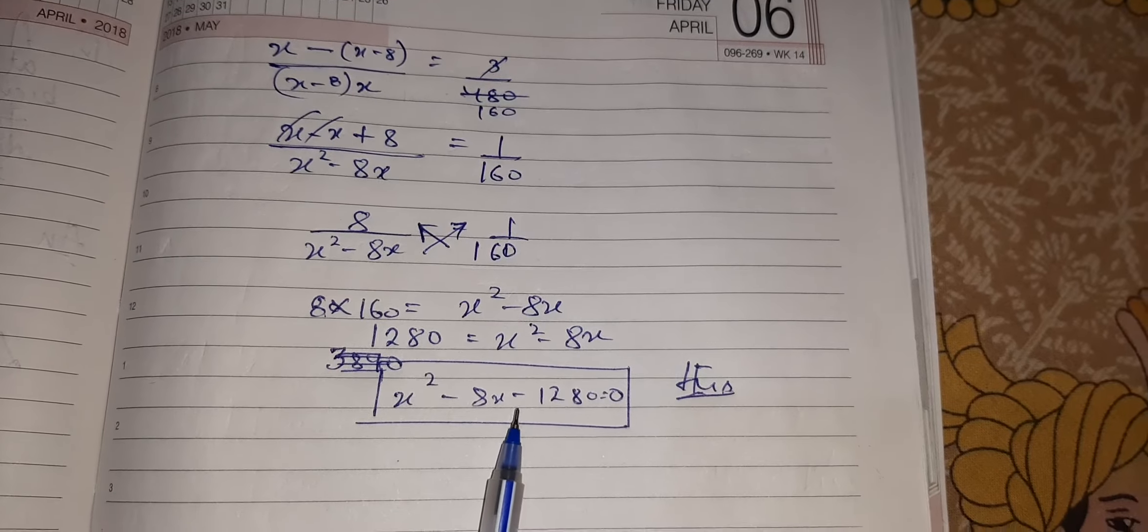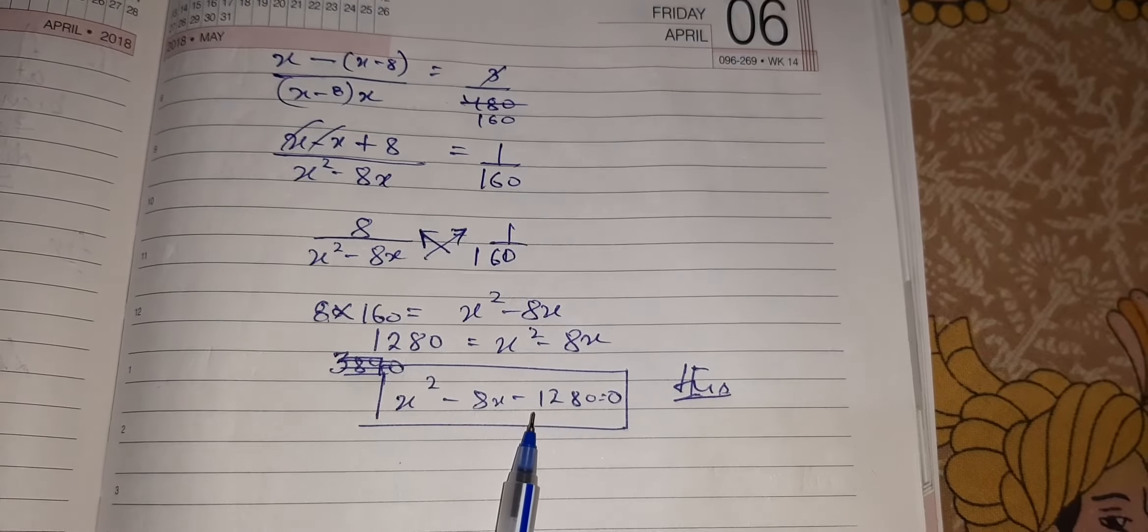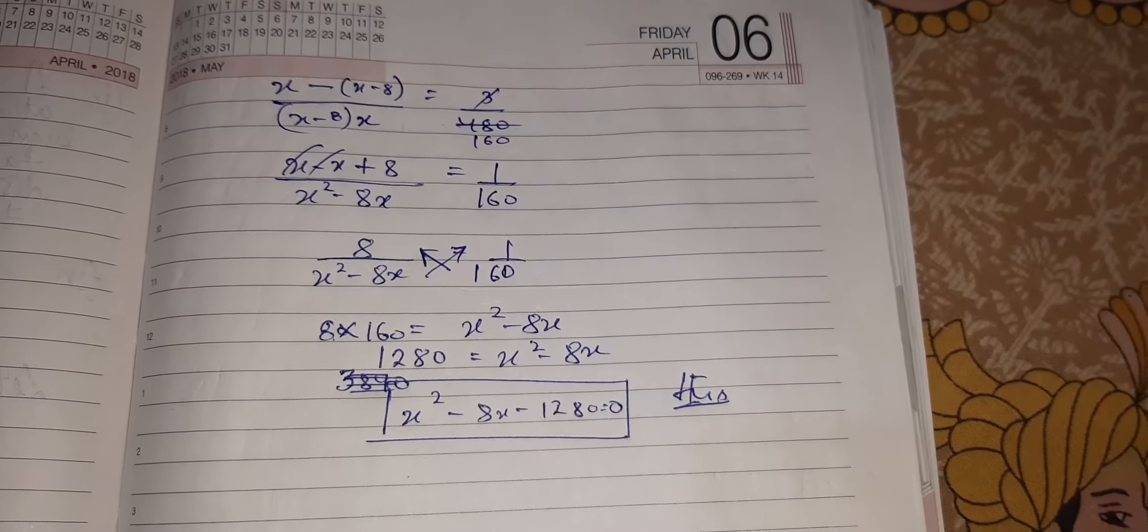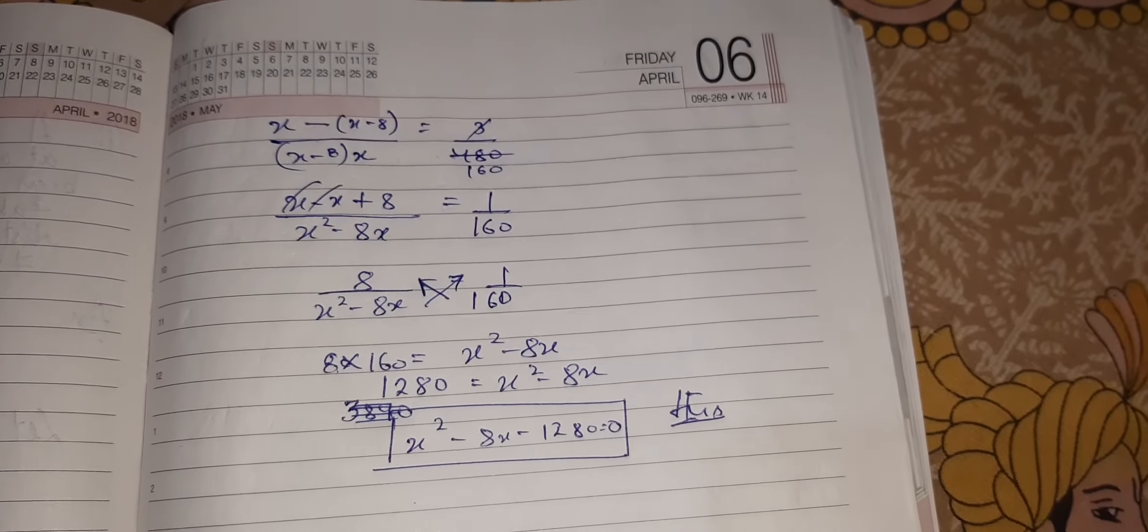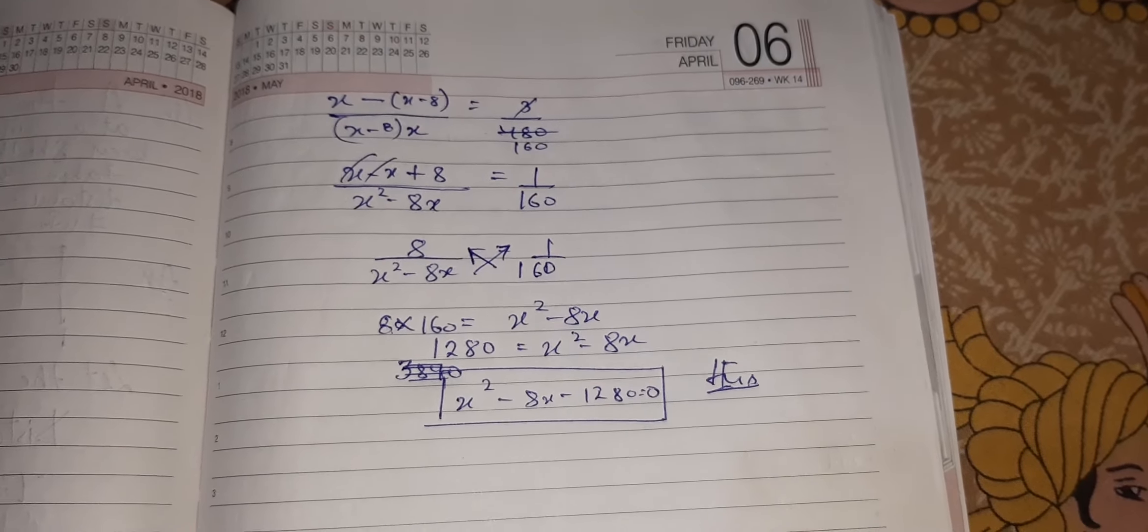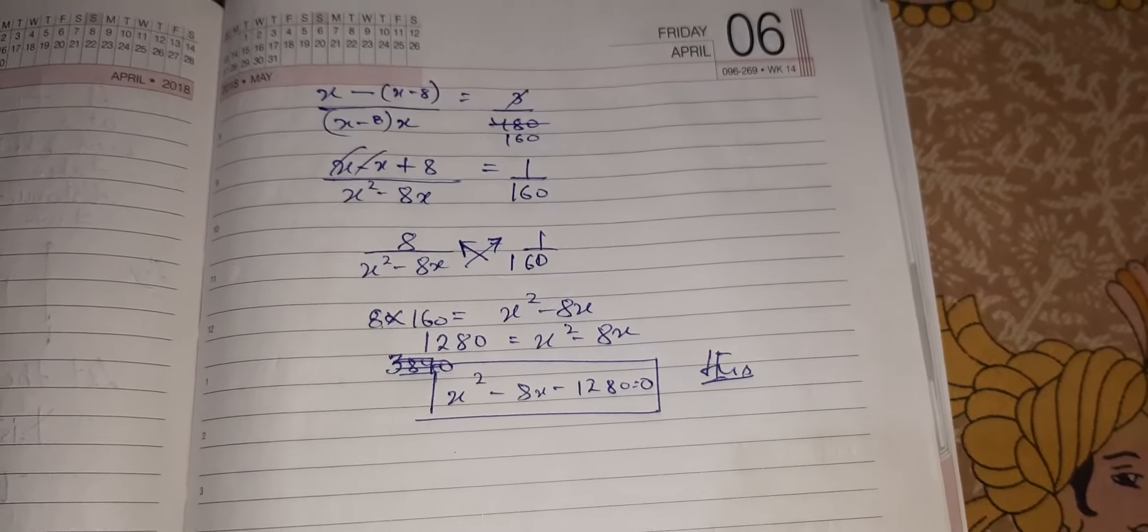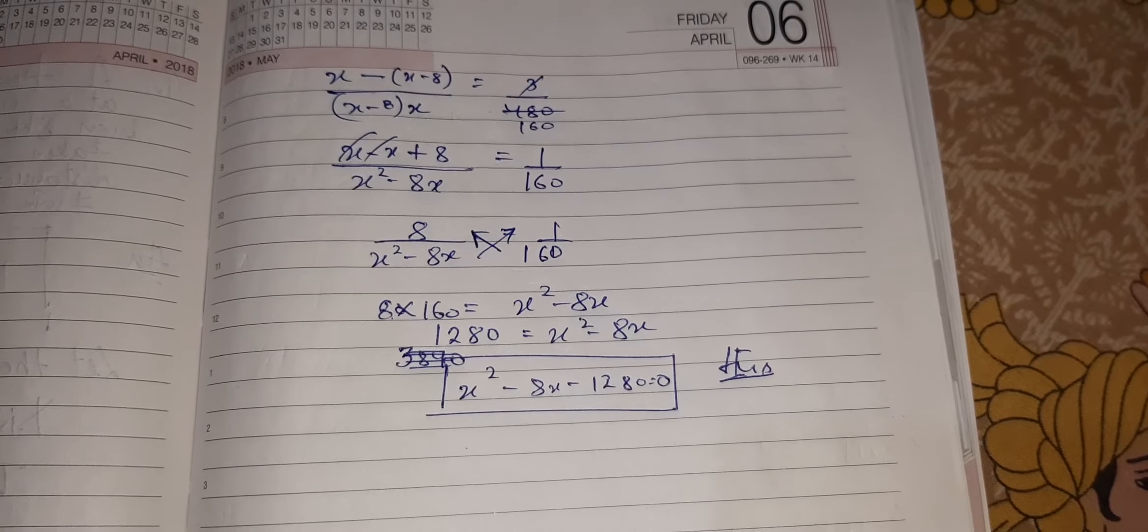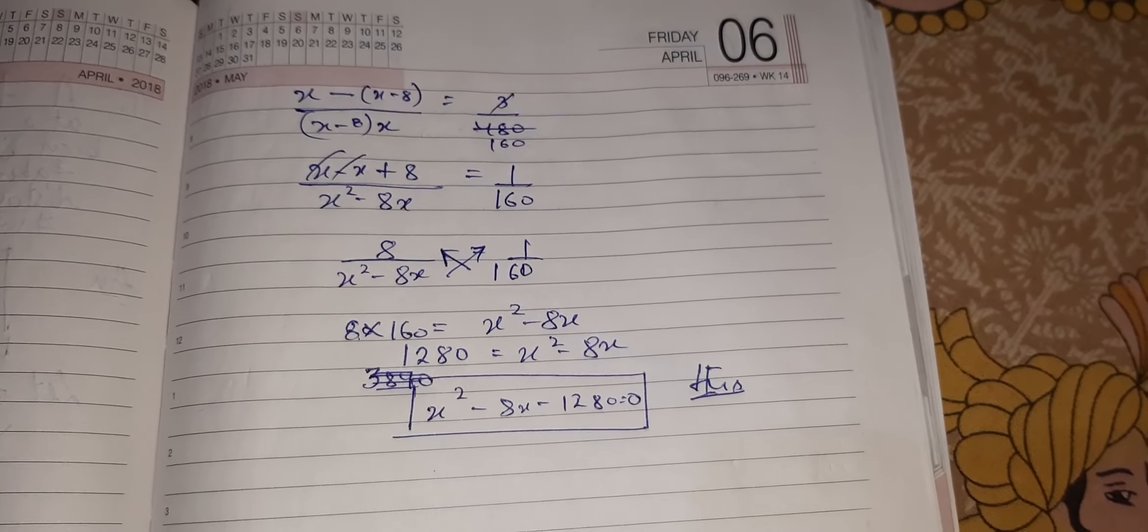It might be a plus 1280 somewhere, but it is minus 1280, okay? Now, just solve it. Do these questions in your fair notebook. Before that, I am sending you the mind map also. Draw that mind map. Then, start with exercise. God bless you all of you.